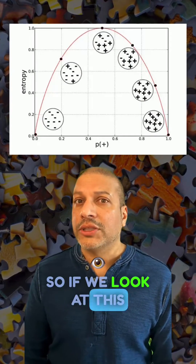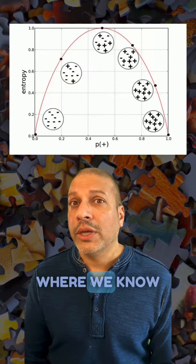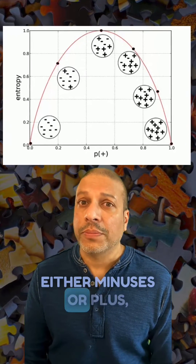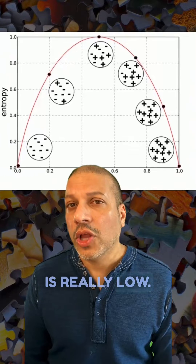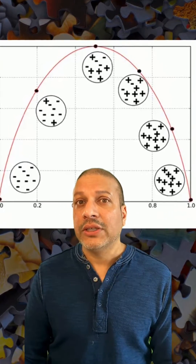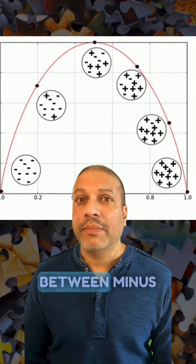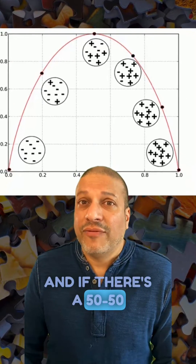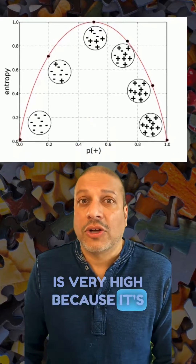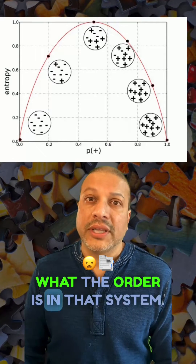So if we look at this plot, you'll notice at the bottoms of the plot, where we know that it's likely either minuses or plus, the entropy is really low. But as we move up higher, what we see is there's a more equal distribution between minus and plus. And if there's a 50-50 distribution, the entropy is very high because it's hard to figure out what the order is in that system.